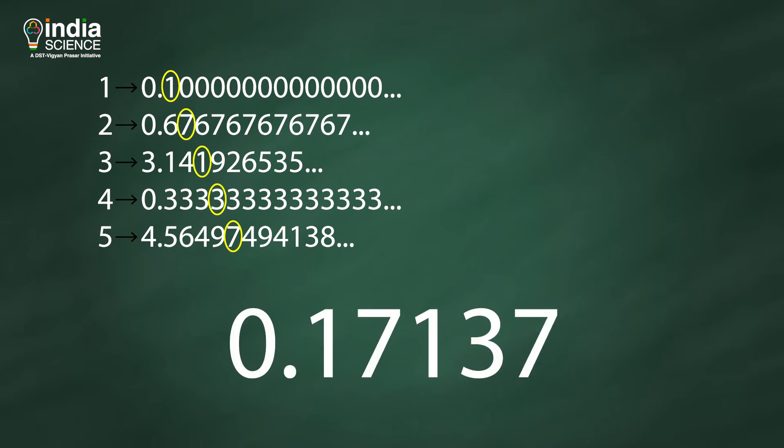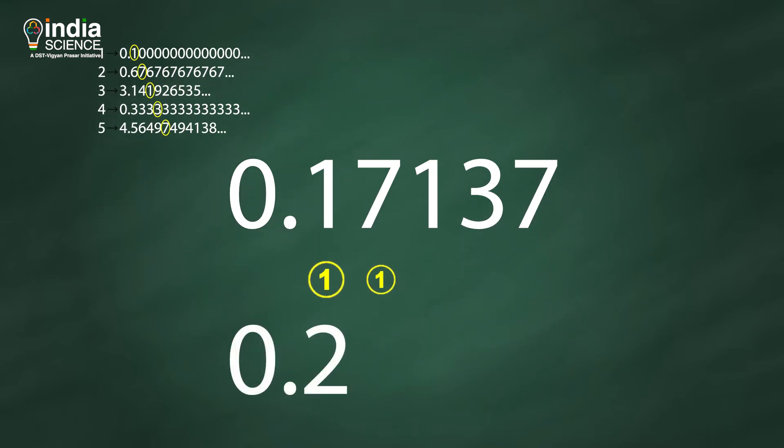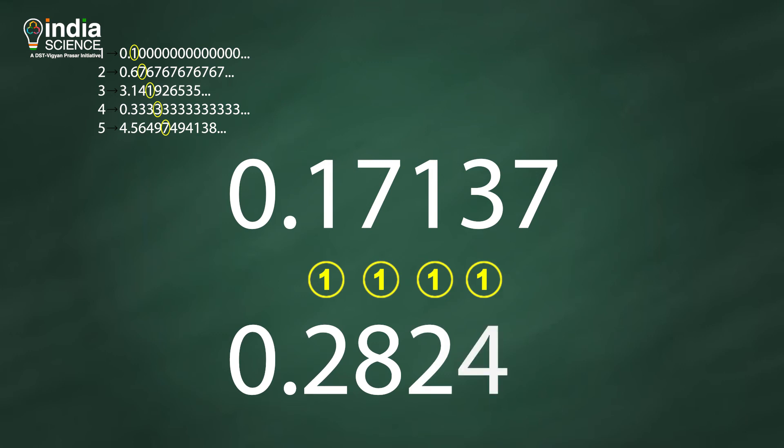We make a new number by taking each of these digits and adding 1 to them, which becomes a number 0.28248. Continuing on for all the other numbers on our list.